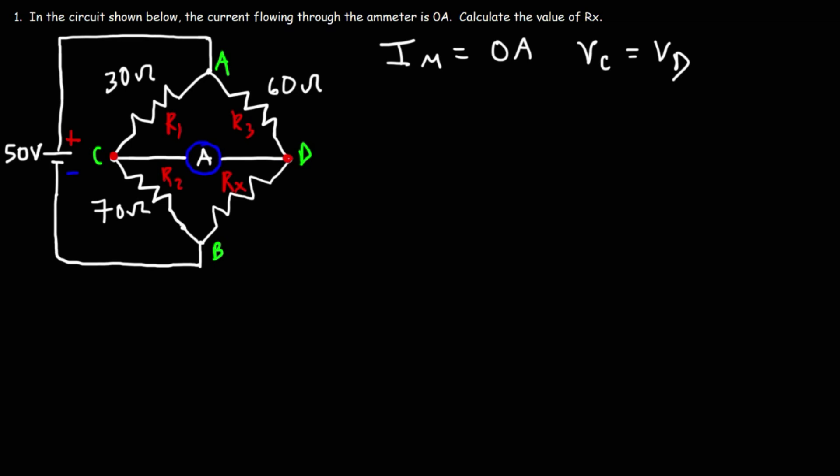So whenever you have a balanced condition, the resistors on the left are actually proportional to the resistors on the right. So going from R1 to R3, we simply need to multiply it by 2. 30 times 2 is 60. So going from R2 to Rx, we need to multiply by 2. And that will give us the answer. So Rx is going to be equal to 140.